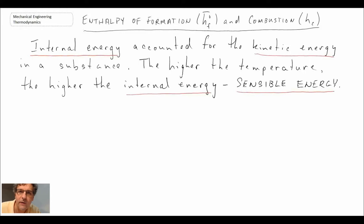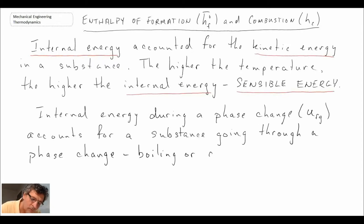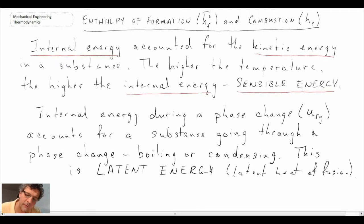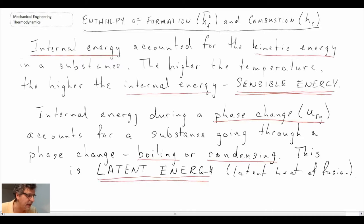We also had internal energy associated with a phase change, when a substance would go from either a liquid to a vapor, a vapor back to a liquid, or from a solid to a liquid. We use the subscript FG to denote that. In this course, our working fluid is either boiling — going from liquid to vapor — or condensing from vapor back to liquid. This is what we refer to as latent energy, as opposed to sensible energy, which is just a temperature change without a phase change.